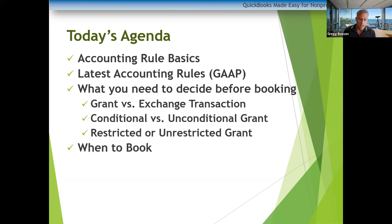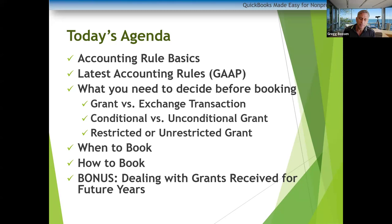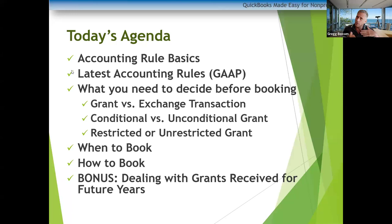The second question is, if you decide it is a grant, you've got to determine whether it's conditional or unconditional — that determines when you book it. You also have to determine whether the grant is restricted or unrestricted. Those are the three questions you'll need to apply to every single grant to determine when and how to book it. At the very end we're going to look at a problem and show how to fix it in QuickBooks when a grant received at year-end is for a future year.